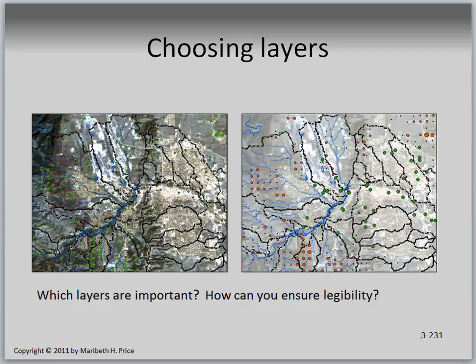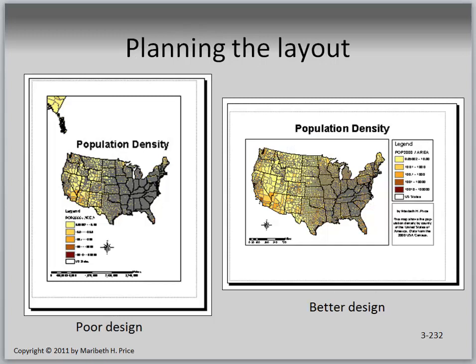Choosing layers: which layers are important and how can you ensure legibility? The point here is that the raster underlayer can make it very difficult to see the data — in this example it looks like Washington watersheds. So choose your layers carefully and also layer them carefully as you include them in the map.